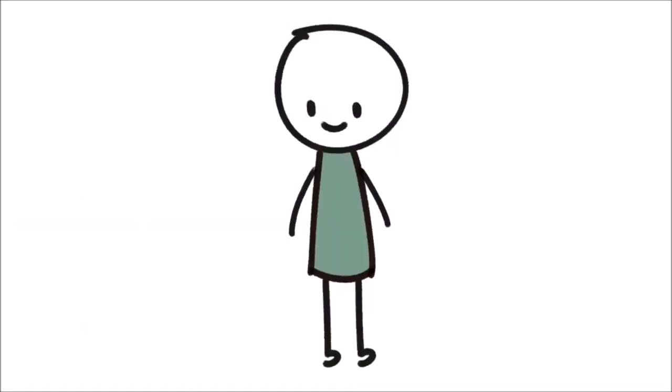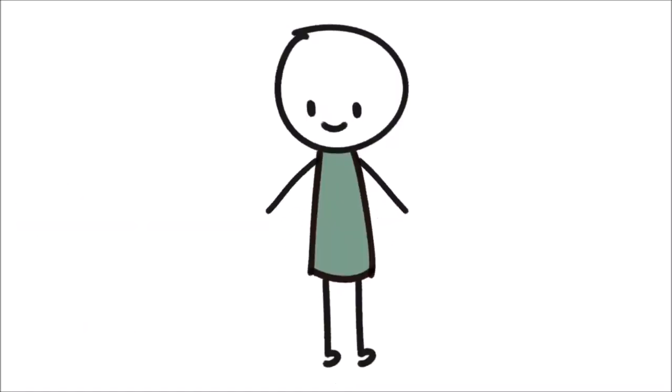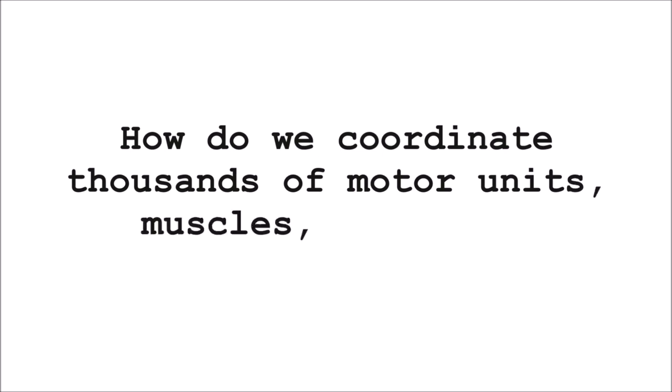In a reaching task, for example, there are multiple joint movements we must control for in each direction at each joint in the arm. So, how do we coordinate thousands of motor units, muscles,